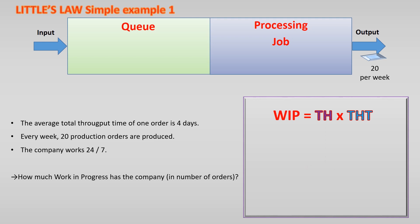The throughput is 20 orders in one week or 20 orders per 7 days and it takes 4 days for the total production time. The average number of orders in this production system is 11.4.